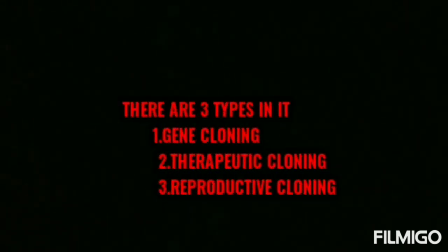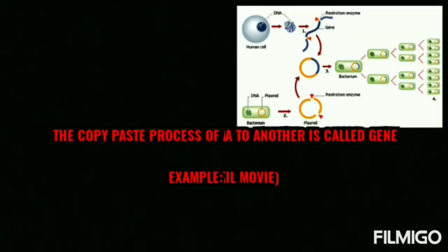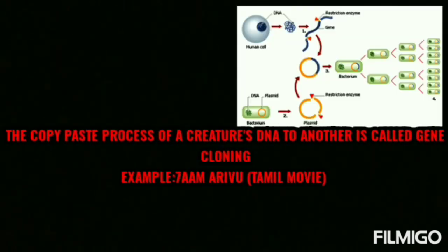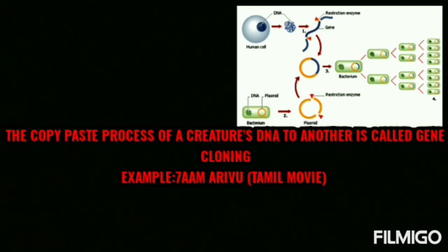Now, artificial cloning. There are three types of artificial cloning: gene cloning, therapeutic cloning, and reproductive cloning. Let's look at them one by one. Gene cloning involves taking one of the DNA segments — a specific gene — and doing a copy-paste of that gene.